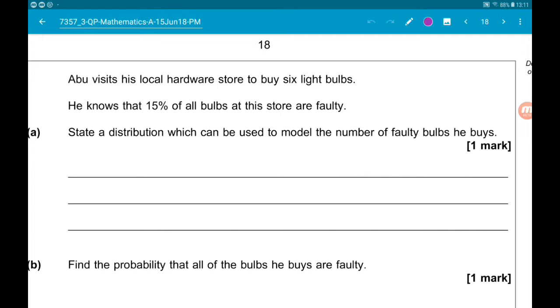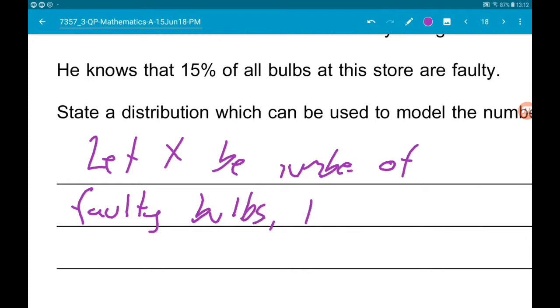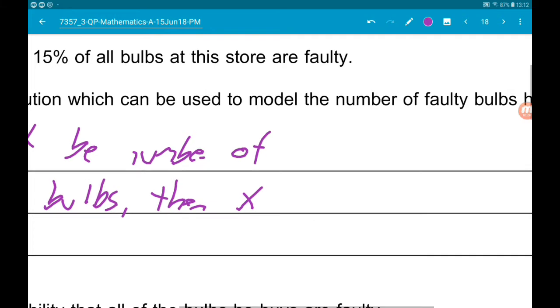Part A wants us to state a distribution which can be used to model the number of faulty light bulbs. So this is an event with two possible outcomes, faulty or not faulty, so it's binomial. So let's let X be the number of faulty bulbs, and then X has a binomial distribution.